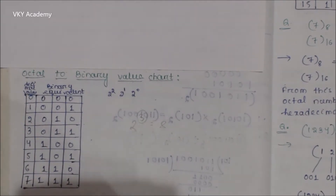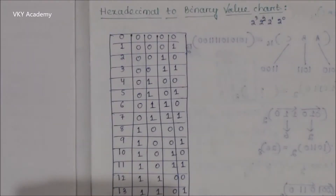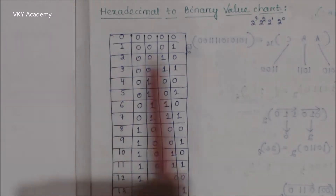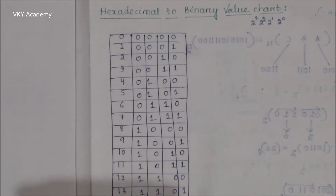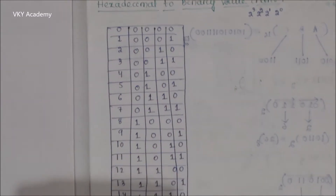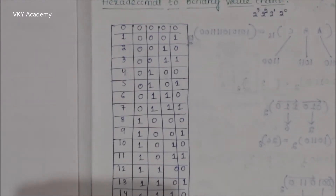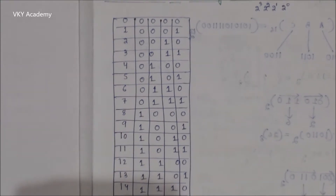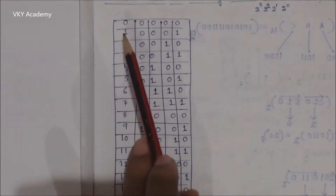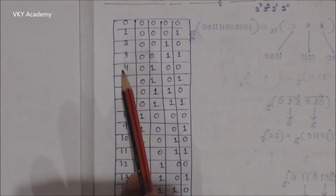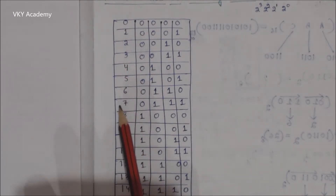This is all about octal number system. Next is hexadecimal number system. So this is a hexadecimal to binary chart. We discussed in the previous class that a hexadecimal number system consists of 16 digits. The 16 numbers are 0, 1, 2, 3, 4, 5, 6, 7, 8, 9.